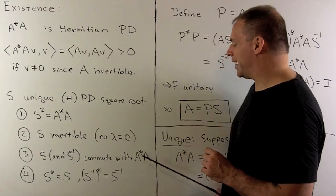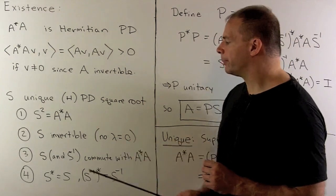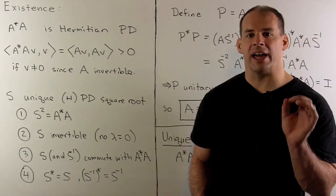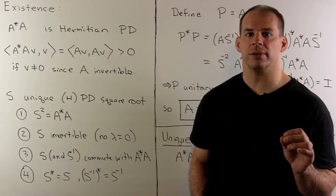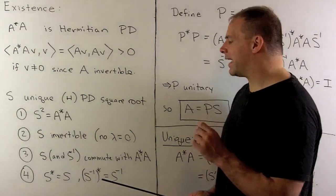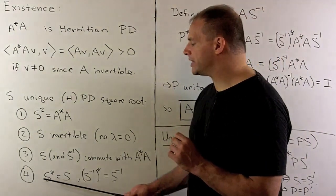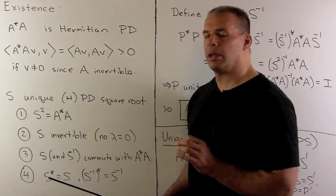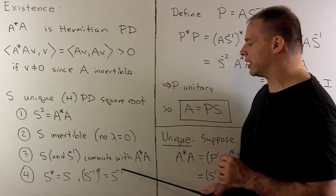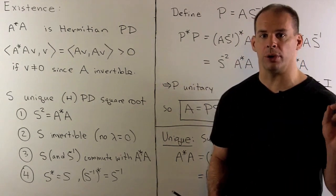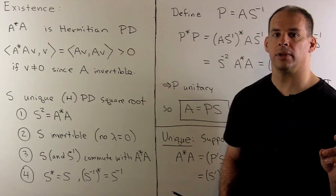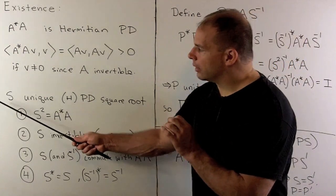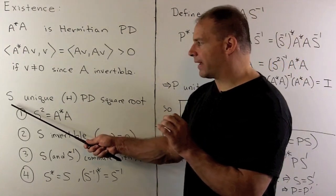Because A-star A equals S squared, A-star A commutes with S, and A-star A also commutes with S inverse. Finally, S is Hermitian — S-star equals S — and S inverse star equals S inverse, so S inverse is also Hermitian.